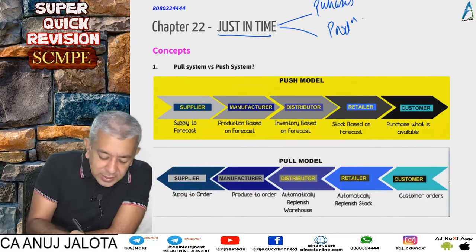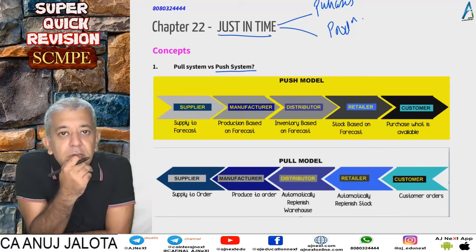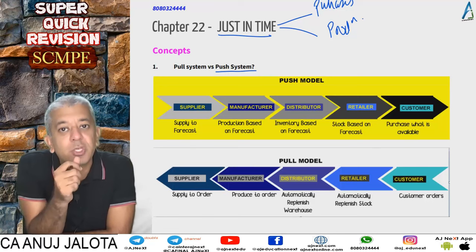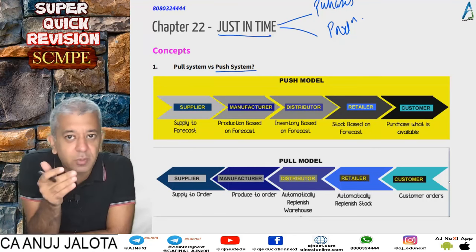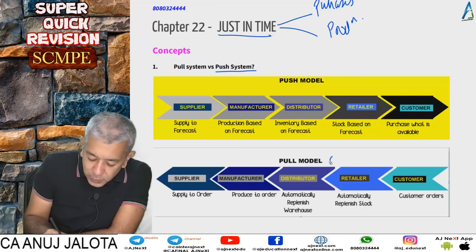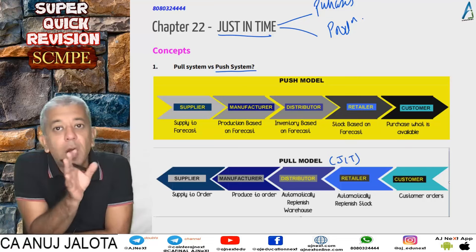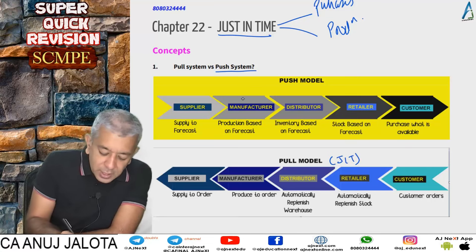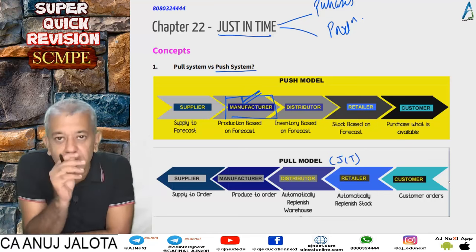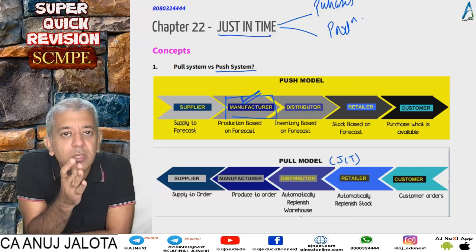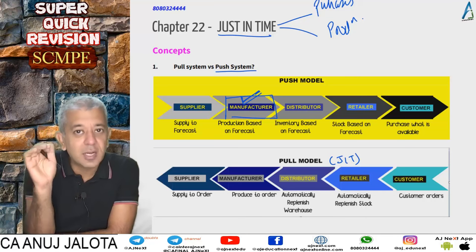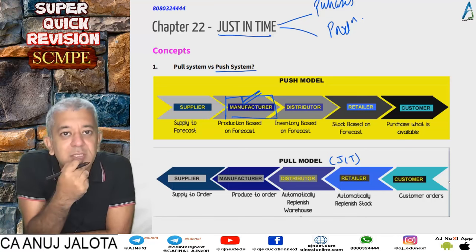Traditionally there used to be a push system. We also call this a supply chain. There are two types of supply chain: one based upon the push model and one based upon the pull model. The pull model is basically your Just In Time system. A supply chain, in reality, means how the goods move from our suppliers to our customers via us.